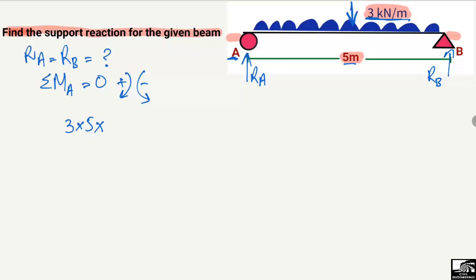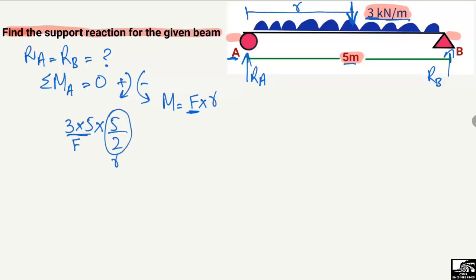Now we multiply by the moment arm. The moment is always equal to force times moment arm, so the force is 3 × 5 and the moment arm R is 5 divided by 2, because the equivalent concentrated load acts at the center of the beam. This load acts in the downward direction and creates a clockwise moment about point A, so it is taken as positive.